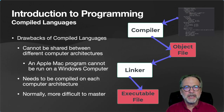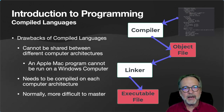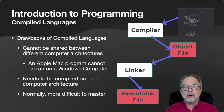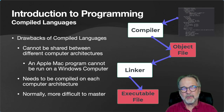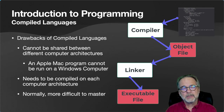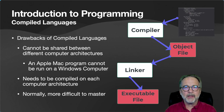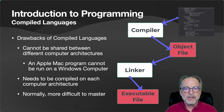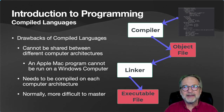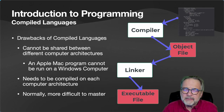Some drawbacks of a compiled language: it really cannot be shared between different computer architectures. For instance, if I compiled a program on an Apple Macintosh and tried to run it on a Windows computer, it just wouldn't work. Programs written for a compiled language need to be compiled for each operating system or CPU architecture. It is also normally more difficult to master because of these extra steps — but that's not an insurmountable problem; you just have to learn how to make it work.